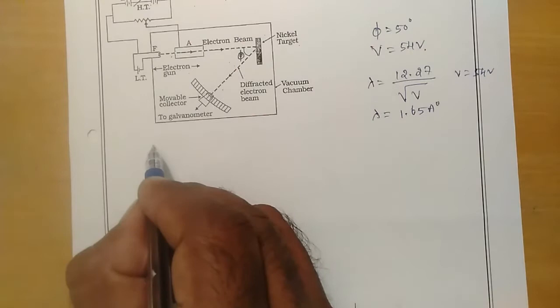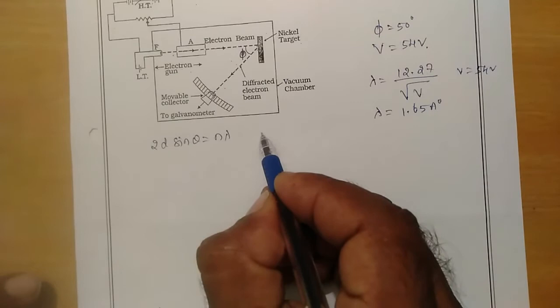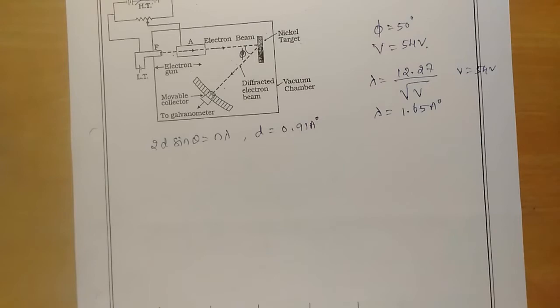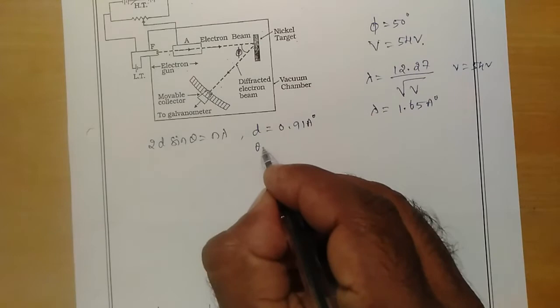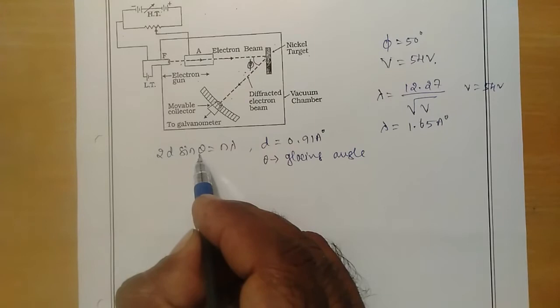Let us consider Bragg's law: 2d sin θ = nλ. This is Bragg's law as we have seen in our previous video. Here d is the inter-atomic plane distance. For a nickel crystal, d = 0.91 Ångströms — that is, the distance between one plane of the nickel crystal and another. θ is what we call the glancing angle. Note that π is the scattering angle, whereas θ is the glancing angle, and now we have to calculate the glancing angle.